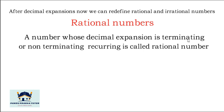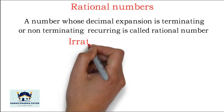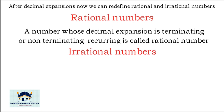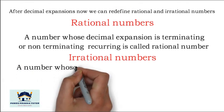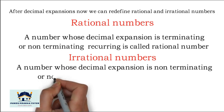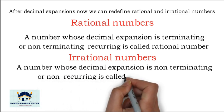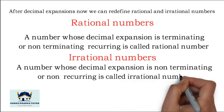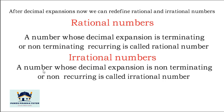Terminating and non-terminating recurring (repeating) — such numbers are called rational numbers. An irrational number is a number whose decimal expansion is non-terminating non-recurring. The division does not terminate, and the decimal expansion does not repeat.